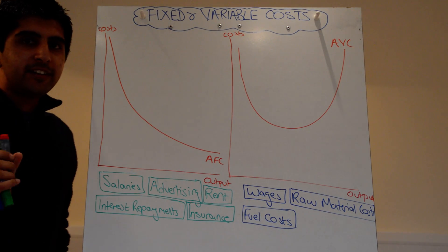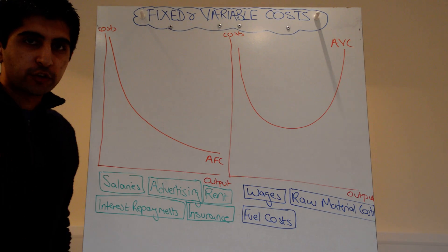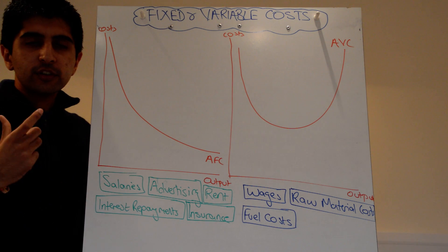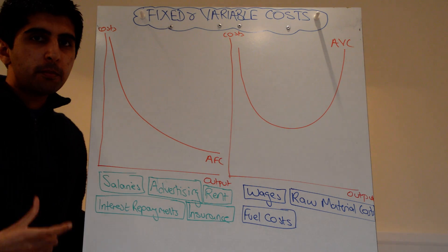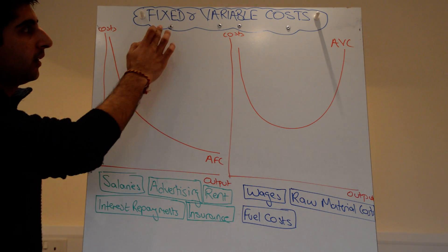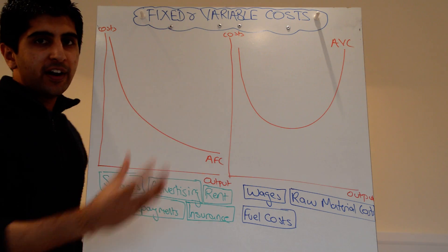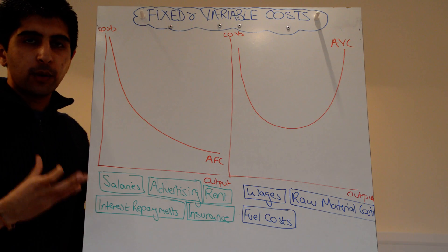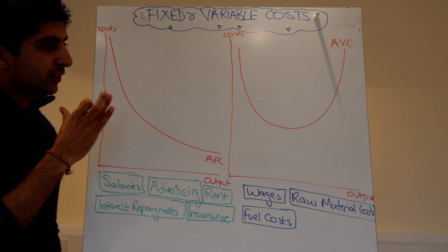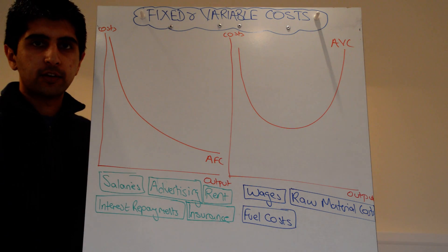Let's get into the nitty-gritty of costs. We're just going to focus on two main costs in this video: fixed and variable costs — what they are and how we can actually map them on a diagram.